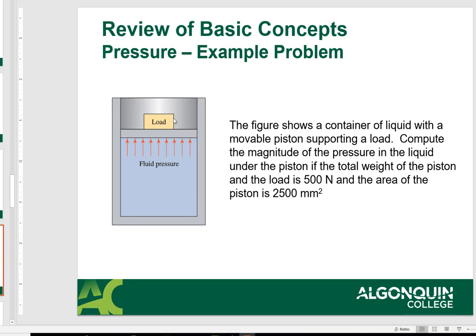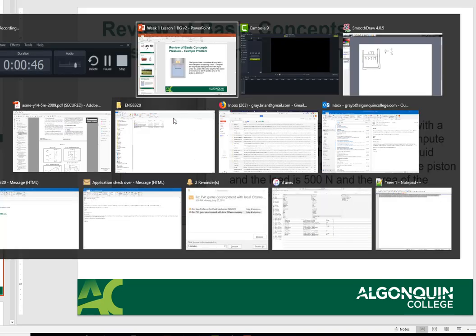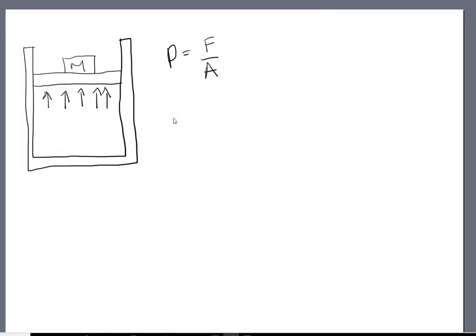Remember we have a load of 500 Newtons and an area of 2500 millimeters squared. I've drawn a free body diagram here with our mass, our cylinder, and we have pressure P here.